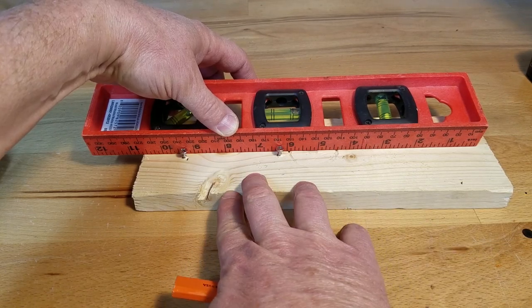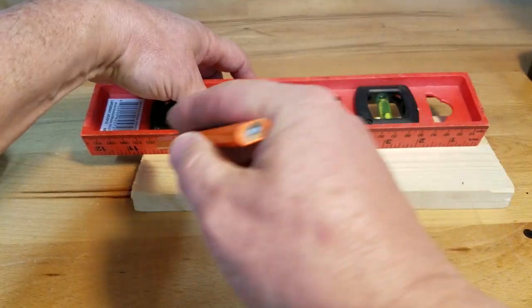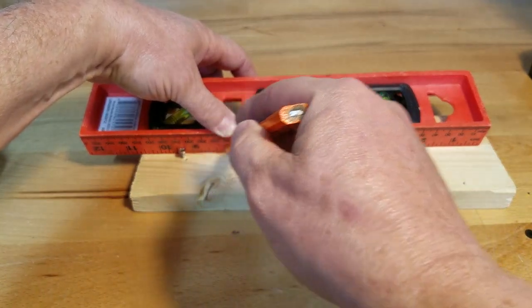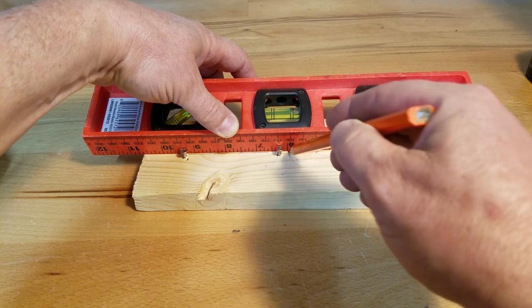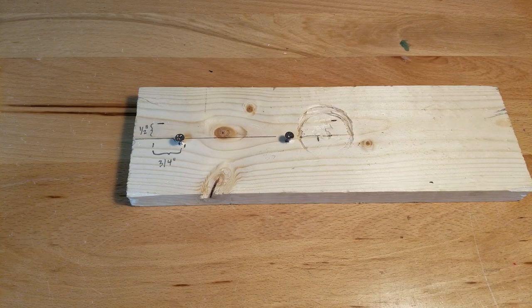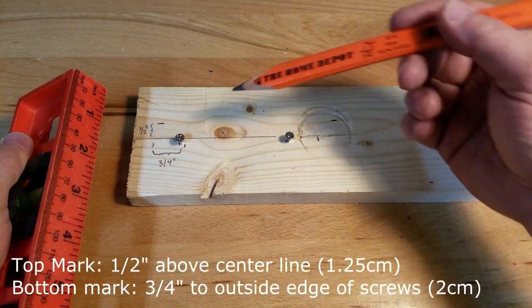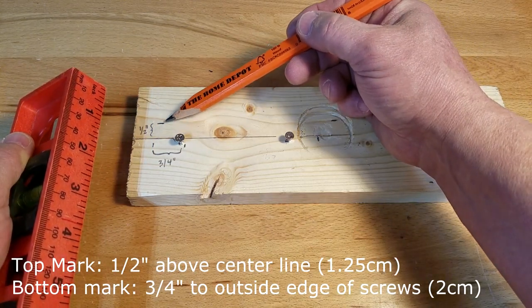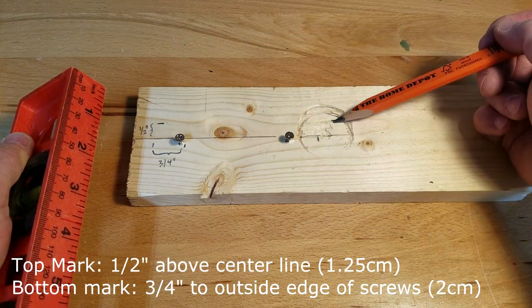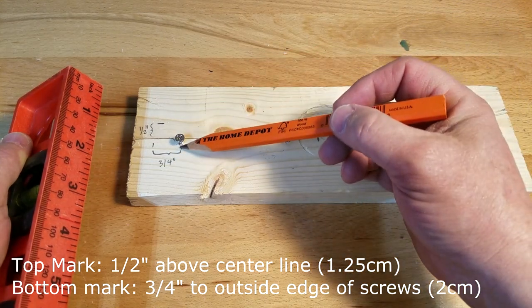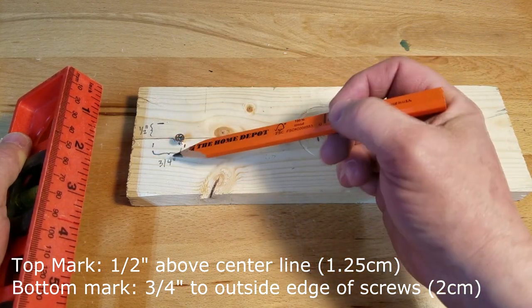With a straight edge, connect the two screws, holding it tightly against them, and draw a line. Let's make some additional marks on our bending jig. From this line, go up a half inch and make two marks. From the center of each screw, go out three quarters of an inch, roughly 1.7 centimeters and about two centimeters.